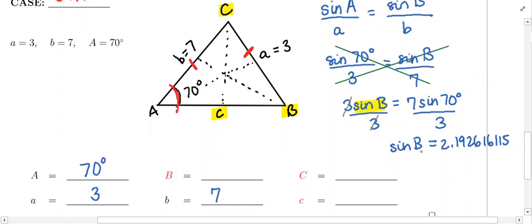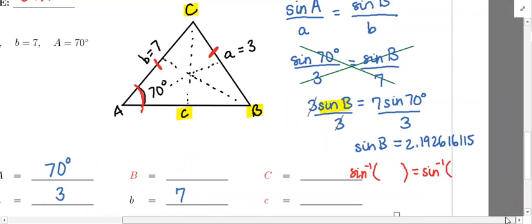At this point, you want to free the B. You want to know the measure of angle B. Since B is trapped by the sine, you're going to have to undo that with a sine inverse. You're going to have to take the sine inverse of both sides. On the left, we're going to have sine inverse of the sine of B equals the sine inverse of this decimal. Sine inverse and sine cancel, so angle B is equal to the sine inverse of this long decimal.